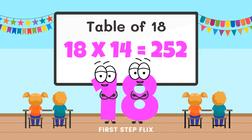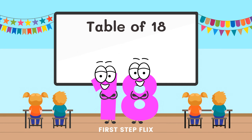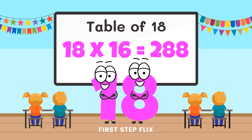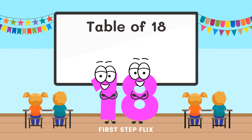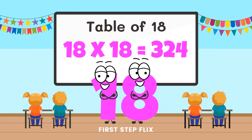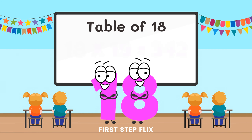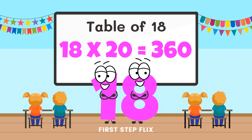18 fourteens are 252. 18 fifteens are 270. 18 sixteens are 288. 18 seventeens are 306. 18 eighteens are 324. 18 nineteens are 342. 18 twenties are 360.